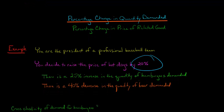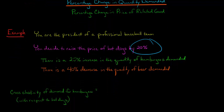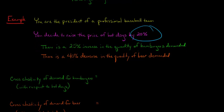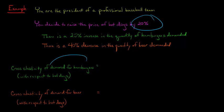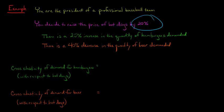Now we can calculate the cross elasticity of demand for hamburgers with respect to hot dogs, and the cross elasticity of demand for beer with respect to hot dogs. When I say 'with respect to hot dogs,' I mean there was a 20% increase in the price of hot dogs, and we want to see how that affects demand for hamburgers and for beer.